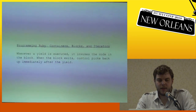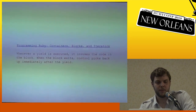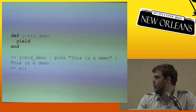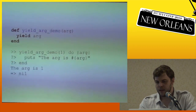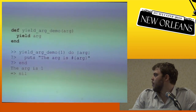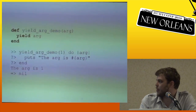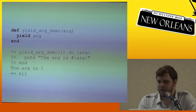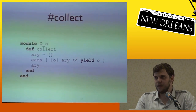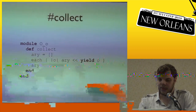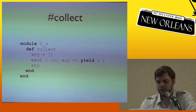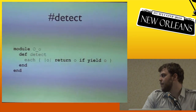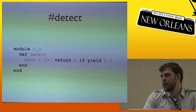We can demonstrate yield by defining a method that just has yield in it, calling that method with a block, and the block is executed. Yield with an argument works similarly. Going back to collect: it takes the argument and yields it to the block you define. Here's detect: for each item, return that item if the return value of yielding it to the block is truthy. And you're all familiar with truthiness in Ruby — if it's nil or false it's falsy, anything else is truthy.